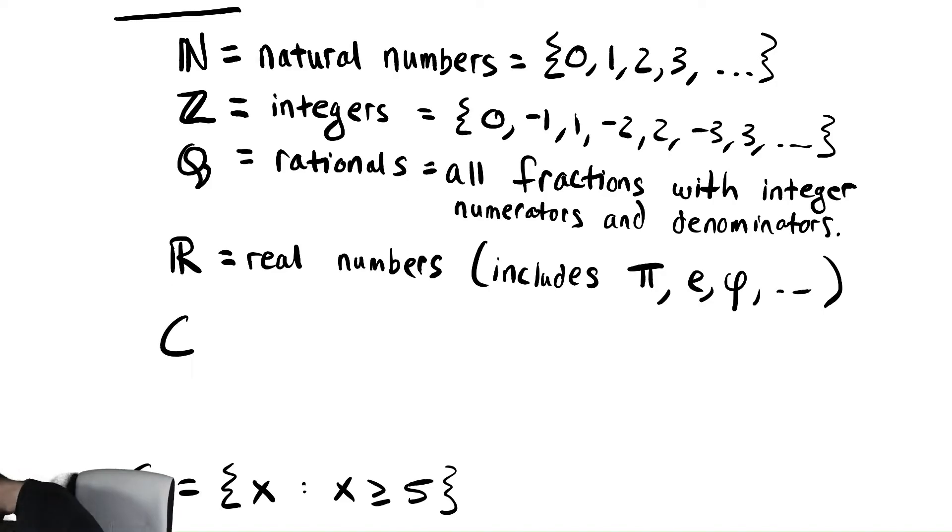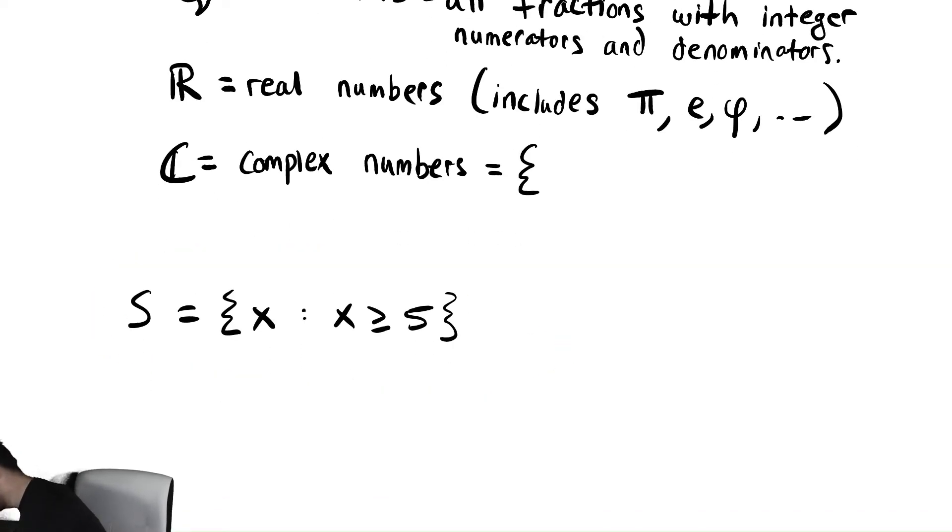There's also the complex numbers, C. And these do lend themselves well to our notation that I was trying to introduce down here. This is the set of all numbers that look like a plus b times i, where i is the imaginary unit, the square root of negative one, where a is in this symbol.